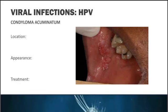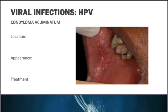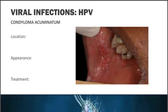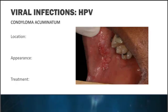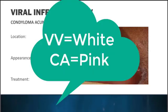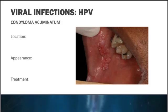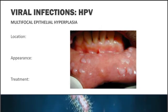The second benign lesion is condyloma accuminatum. These lesions are distinguished from verruca vulgaris because they're more pink in color and more diffuse, but they also have finger-like projections microscopically and sometimes visually. These are usually found in the genital region but can be transmitted to the oral cavity through oral sex or self-inoculation. With condyloma accuminatum you would see multiple lesions throughout the oral cavity. Remember: verruca vulgaris is white, condyloma accuminatum is pink. Treatment is the same — surgical excision — but again they do tend to recur.